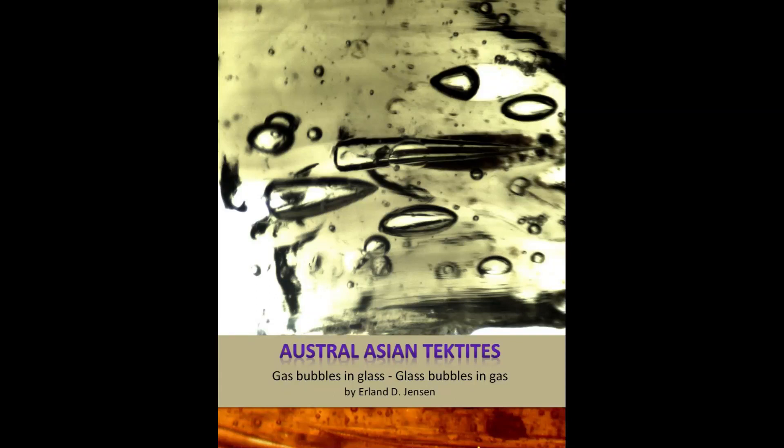This video poster presents a book about Australasian tektites. It contains 42 chapters, as well as a dictionary and a reference list. After watching each video poster, you can download relevant chapters for detailed readings using the link in the description below.